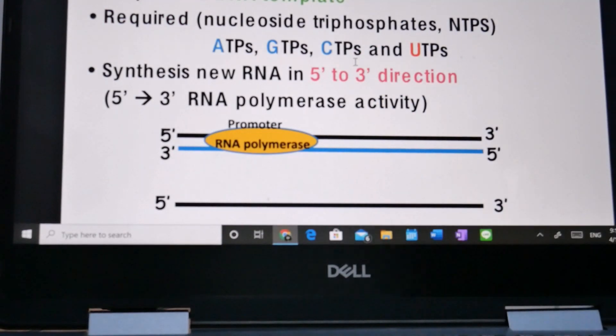Synthesis of new RNA occurs in the five prime to three prime direction, which is the RNA polymerase activity.